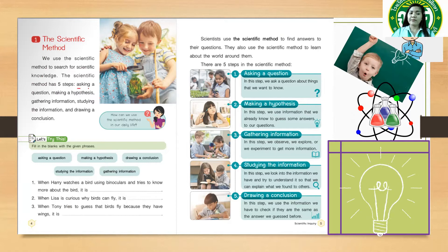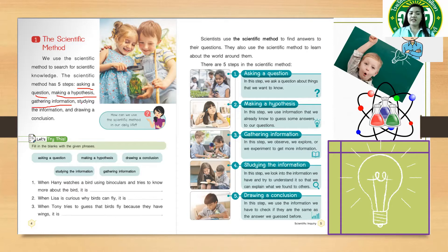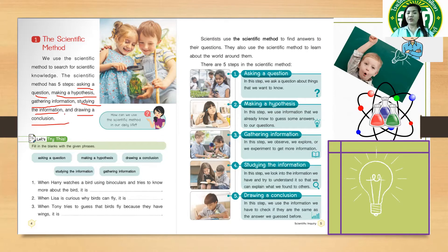Okay, so that is: asking a question, making a hypothesis, gathering information, studying the information, and drawing a conclusion. Those are the five steps of the scientific method.